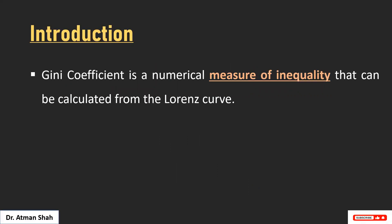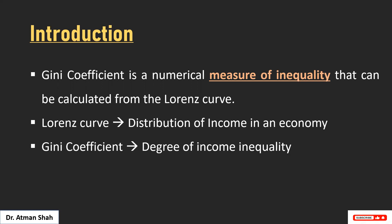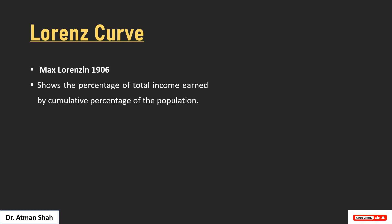Let's begin with the introduction. The Gini coefficient is a numerical measure of inequality that can be calculated from the Lorenz curve. The Lorenz curve shows the distribution of income in any economy, and the Gini coefficient helps us find the degree of income inequality.